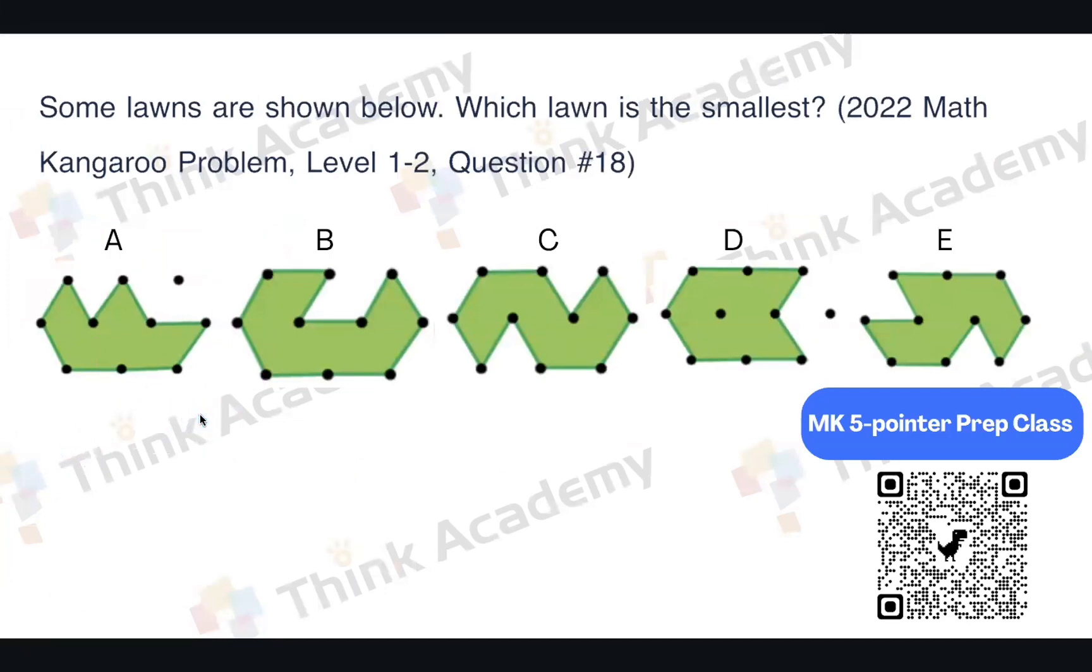This one also requires you to use some special methods to find out the answer correctly and quickly. We know some lawns are shown below. Which lawn is the smallest? If it is the smallest, it will cover more green part or less green part? Definitely less green part, right? So how can we solve it? In our prep classes, our teacher will introduce the method. But now I will give you a little bit of a look. Okay, that is,